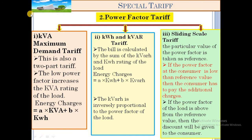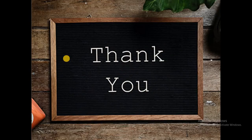The consumer has to maintain the power factor at its maximum value to reduce the energy bill. The power factor should be kept as high as possible to reduce energy charges. This concludes the power factor tariff. Hope you understand all three tariffs: TOD tariff, peak of day tariff, and power factor tariff. In the next lecture, we are going to cover maximum demand tariff, load factor tariff, and availability-based tariff. Thank you for watching this video.